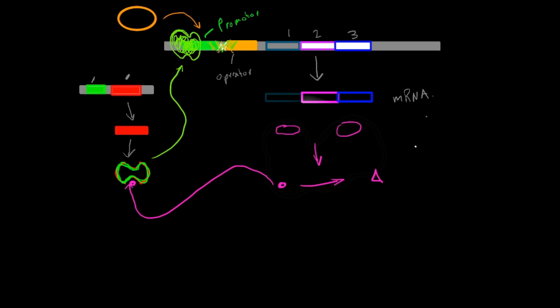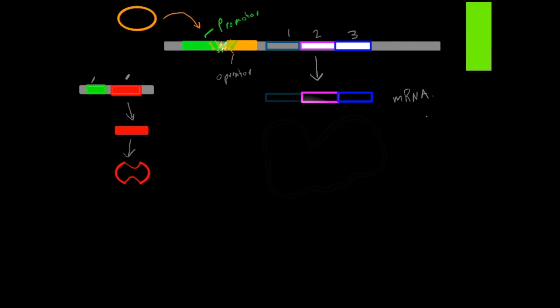Now if you look at a positive repressible operon, it is the complete opposite. So we have an active activator all the time. We will redraw here. This is green, it's an activator. It will always be bound here.